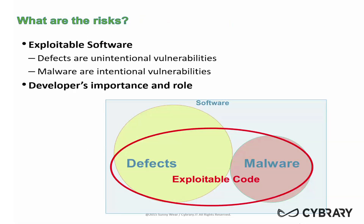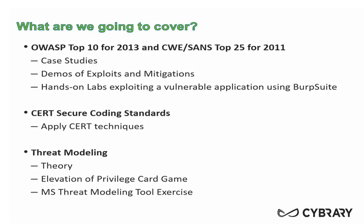So what exactly are the risks that we're trying to address as we cover this material? Mainly, in a nutshell, we're trying to address exploitable code. Exploitable code could be the result of various things. Two of the main areas would be defects or malware. Obviously, defects are unintended — these are programming bugs that programmers do and inadvertently create exposure points inside of their code. And then of course, malware would be that intentional vulnerability, something injected into the code to make it exploitable.